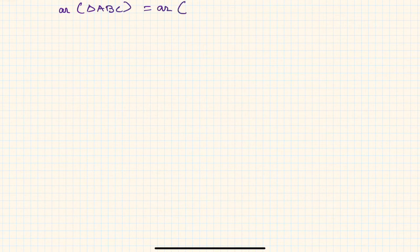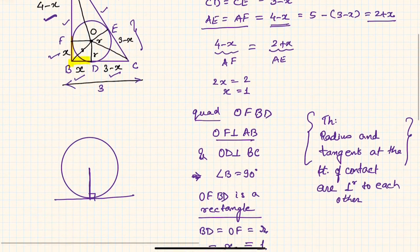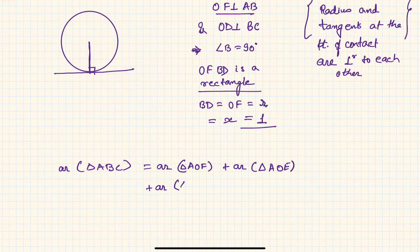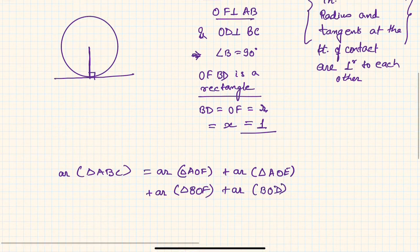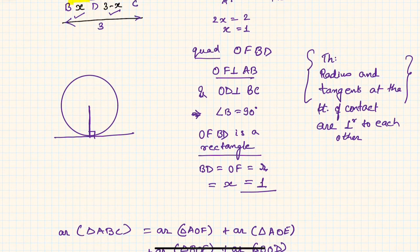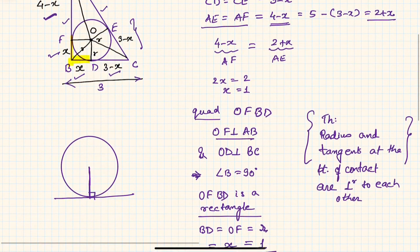Another method is: the area of triangle ABC equals the sum of the areas of all the smaller triangles it's made up of — triangle AOF, plus triangle AOE, plus triangle BOF, plus triangle BOD, plus triangle COE, plus triangle COD.